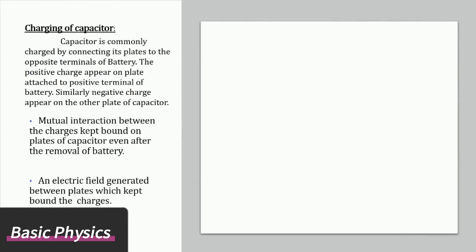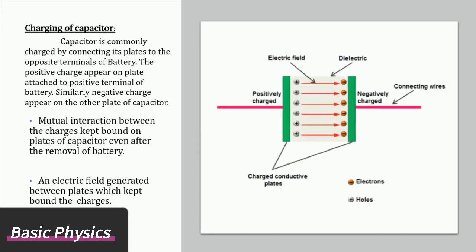Charging of capacitor: Capacitor is commonly charged by connecting its plates to the opposite terminals of a battery. The positive charge appears on the plate attached to positive terminal of battery. Similarly, negative charge appears on the other plate of capacitor.